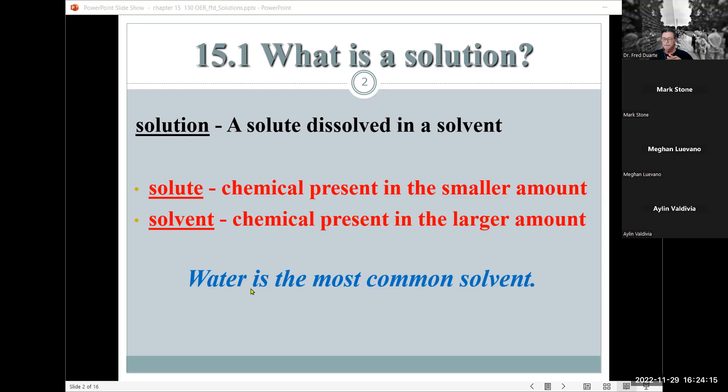The solute is the chemical that normally is in the smaller amount. Whereas a solvent is what is in the larger amount. Now we tend to think of solvents as liquids and solutions as liquids, but we'll soon learn here that that's not necessarily the case. In fact, solutions can be in any of the three physical states.